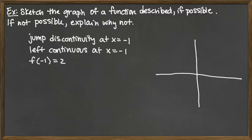So for this first one, we're looking for a function that would have a jump discontinuity at x equals negative 1, it would be left continuous at x equals negative 1, and f of negative 1 would be equal to 2. As I'm looking at this, I'm realizing that the only x value that they are specifying is negative 1. So I'm going to go ahead and put that in my graph and let's see if we have any sort of issue.